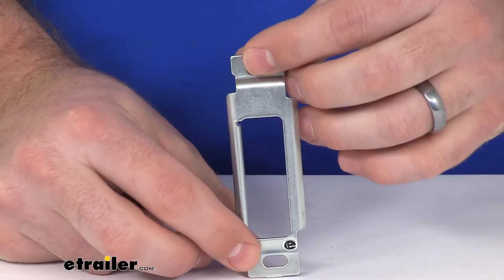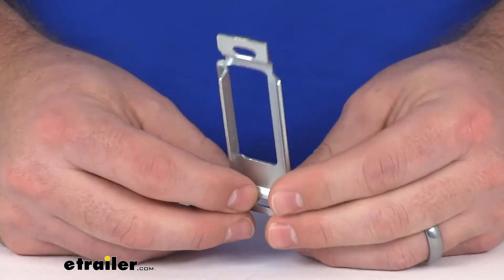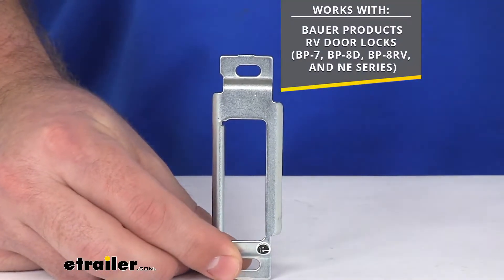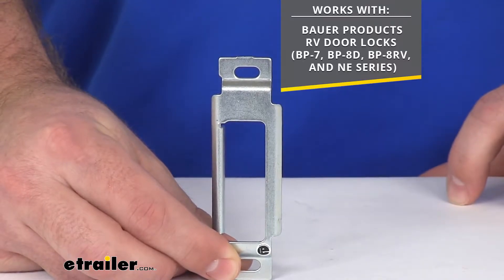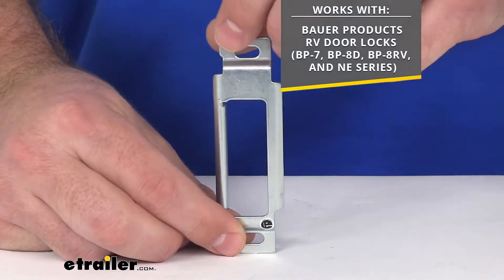This is going to replace a worn out or damaged strike plate on your RV door lock. This will work with the Bauer products RV door locks BP7, BP8D, BP8RV, and NE series.